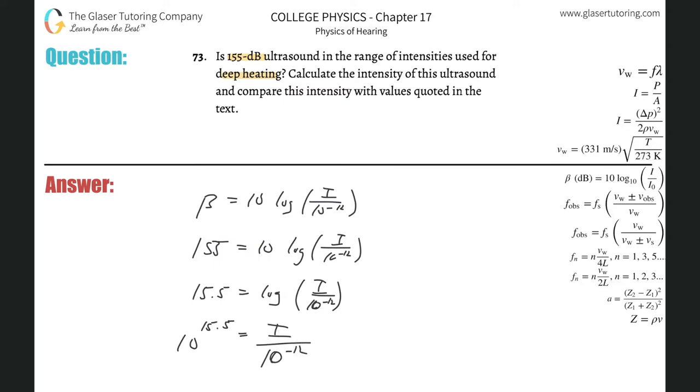And now you just cross multiply here. So the intensity here is going to be 10 raised to the 15.5 times 10 raised to the negative 12, and we get a value about 3.16 times 10 to the third, that's watts per meter squared.